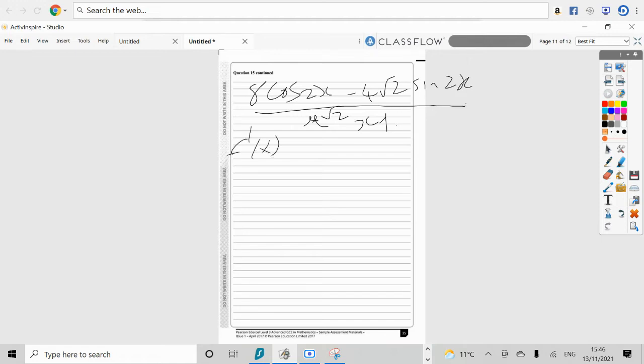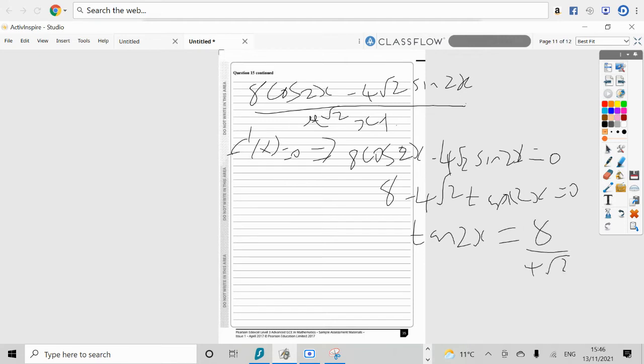So, f prime of x equals to 0 will imply that 8 cosine 2x minus 4 root 2 sine of 2x that's got to be 0. So, I get 8 minus 4 root 2 tan 2x, it's got to be equal to 0. So, we get tan of 2x being equal to 8 over 4 square root 2, which is 2 over root 2, which is just root 2. That's required.